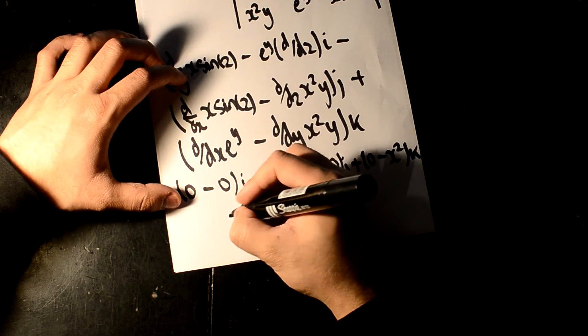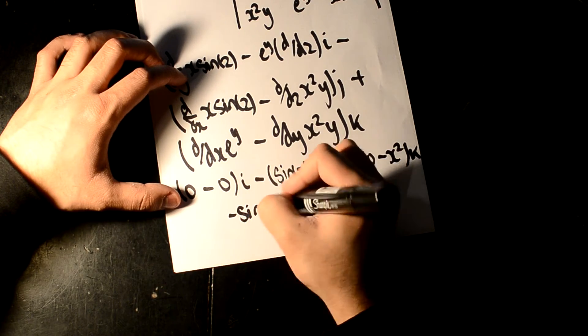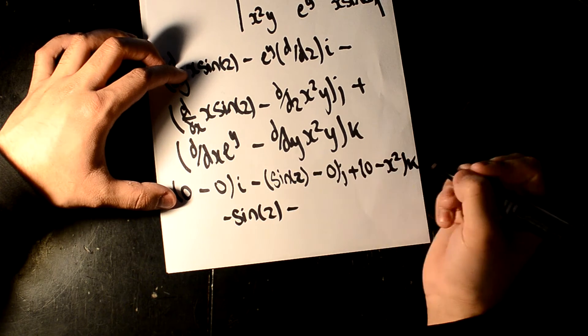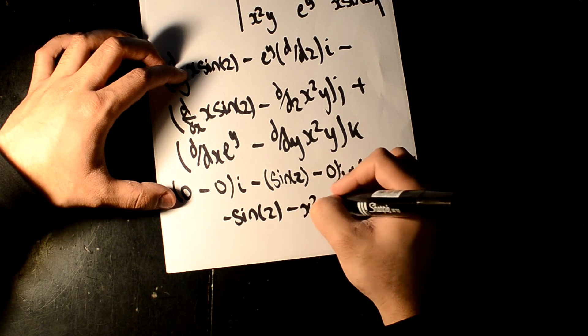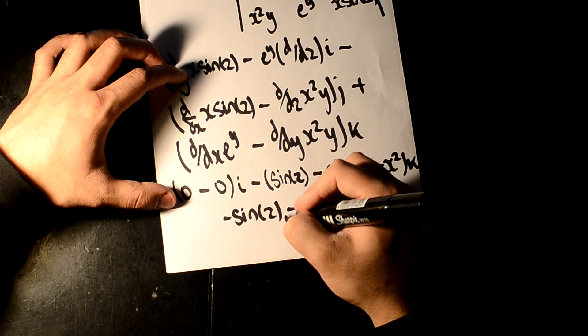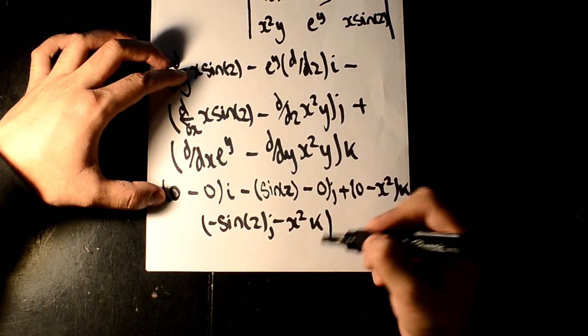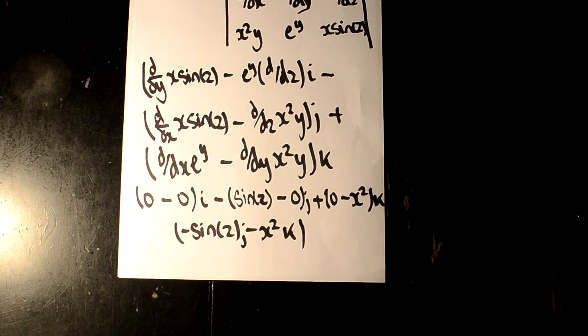We can simplify this down to minus sine z, minus x squared k. Oops, sorry. That is a j as well. That right there is the curl of a vector field.